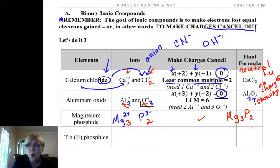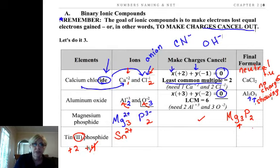Remember, no cursive, true uppercase, true lowercase with your symbols. Now tin can either be plus two or plus four, so we need a way in the name to communicate that information. And that's what that roman numeral two is. It tells us we have the tin plus two as opposed to the tin plus four.